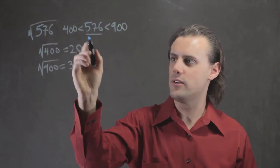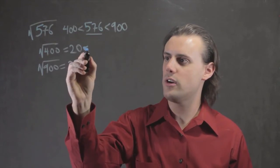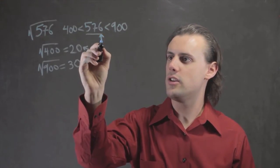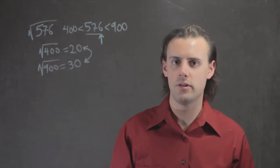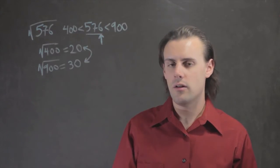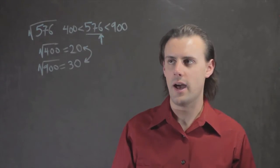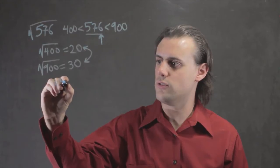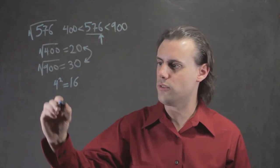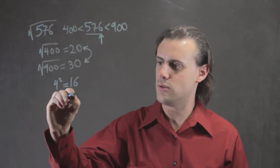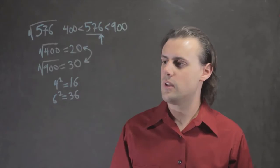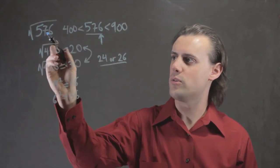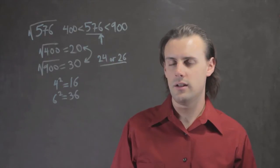So we know that the square root of 576 must lie somewhere in between these two numbers. The next step is to look at the units place — if you know that the square root exists as a whole number — and ask: what number when squared has a 6 in the units place? It turns out there are two numbers: 4, because 4 squared is 16, and 6, because 6 squared is 36. So we could have either 24 or 26 as the square root of 576.